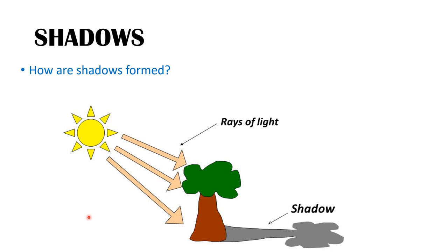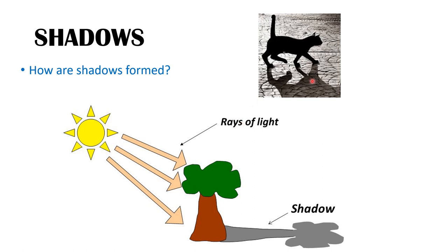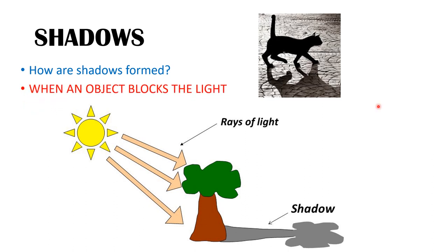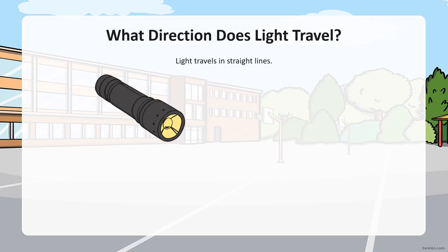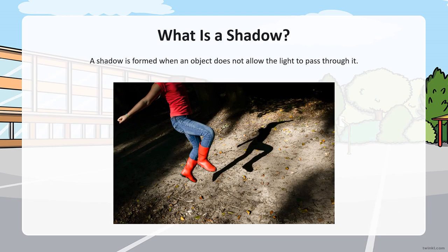Our next subtopic is about shadows — bayang-bayang. How are shadows formed? The shadow is black in colour. The shadow forms when an object blocks the source of light. But before that, we must know: light travels in straight lines — cahaya bergerak lurus. A shadow is formed when an object does not allow light to pass through it.